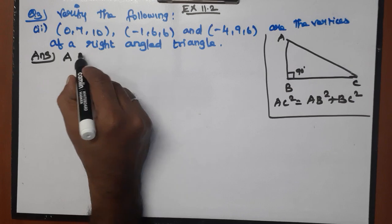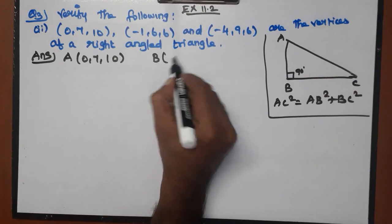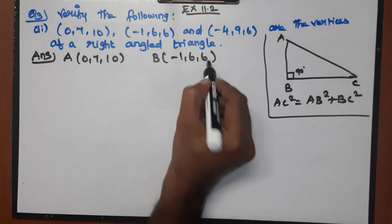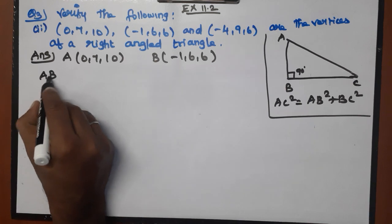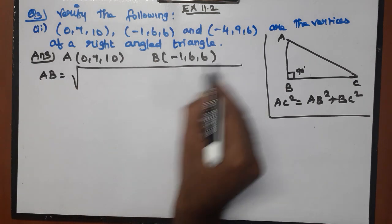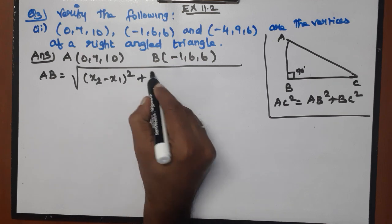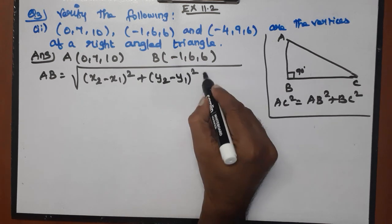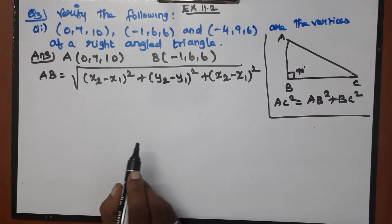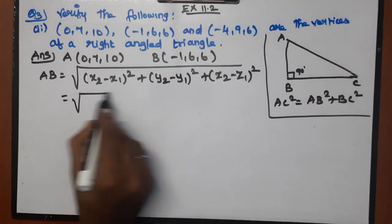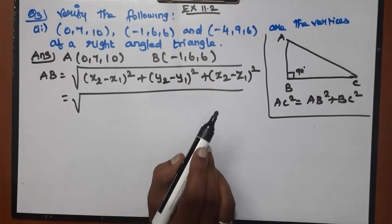Let A = (0, 7, 10), B = (−1, 6, 6). The distance formula is AB = √[(x₂−x₁)² + (y₂−y₁)² + (z₂−z₁)²]. So AB = √[(−1−0)² + (6−7)² + (6−10)²].